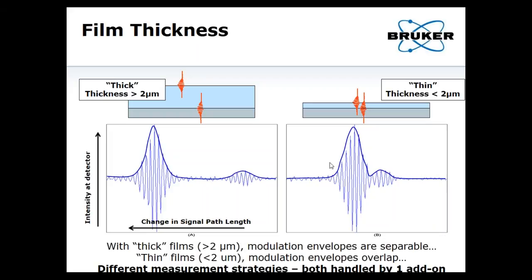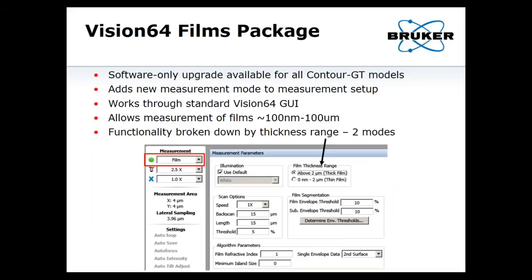Introducing the Vision 64 films package. This is something that's available now — you may already have it if you bought it with the profiler you currently own. This is a software-only upgrade; you don't have to buy any new hardware. We can send it to you remotely. It's available for all Contour GT models as well as the NP-Flex. If you bought an optical profiler in the last few years from us, this is something you can get.